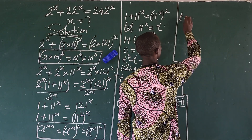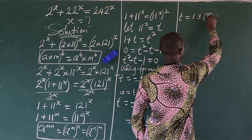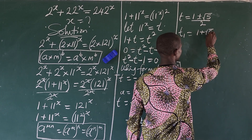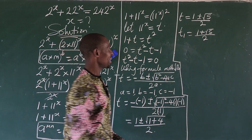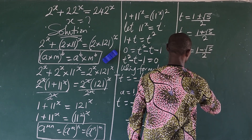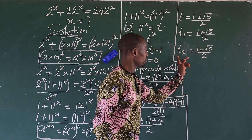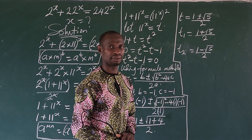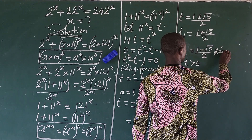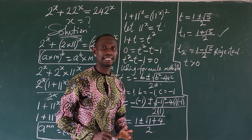So t₁ equals (1 + √5) / 2, which is the golden ratio, and t₂ equals (1 − √5) / 2. Looking at our substitution, t must be greater than zero because 11 to the power of x is always positive. Since (1 − √5)/2 is negative, we reject t₂. Only t₁ is accepted.